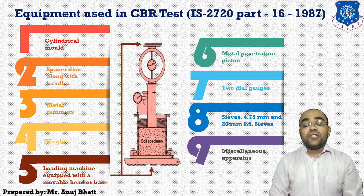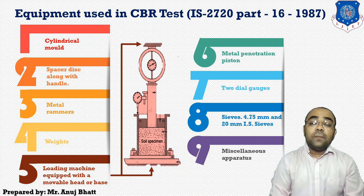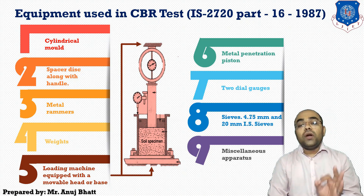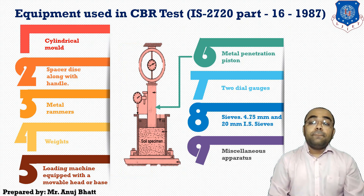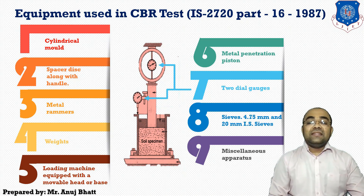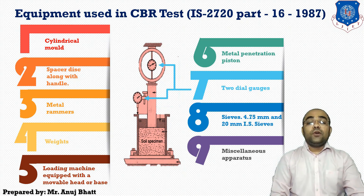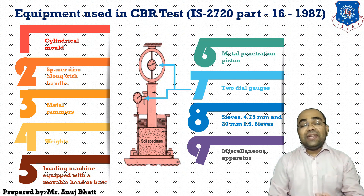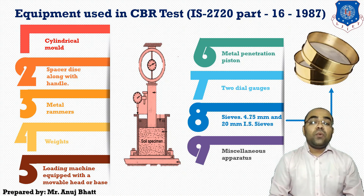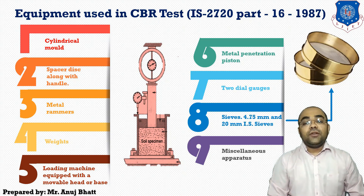The next is the loading machine, with a capacity of at least 500 kg, equipped with a movable head or base that travels at a uniform rate of 1.25 mm per minute. The metal penetration piston has a diameter of 50 mm and a minimum length of 100 mm. Two dial gauges reading to 0.01 mm provide readings for both loading and penetration. For sieves, we use a 4.75 mm sieve and a 20 mm IS standard sieve.